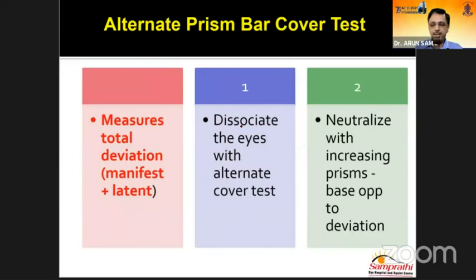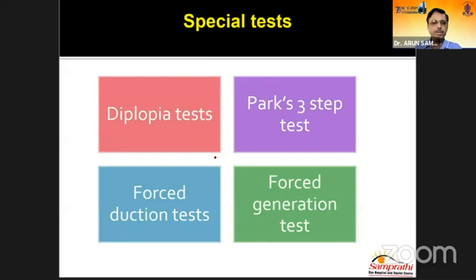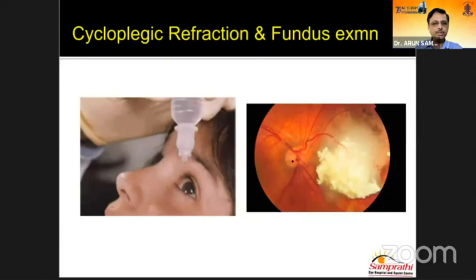The alternate prism bar cover test is very important because it measures the total deviation. We dissociate the two eyes and measure the movement of redress by increasing prisms in front of the deviating and fixing eye. This test is done for distance and near, with and without glasses, in all nine directions of gaze. Once you have all these tests, you reach a diagnosis; in some cases you may require special tests like the diplopia test, the Parks three-step test, or the forced duction test. Cycloplegic refraction and fundus examination are critical and should never be missed.